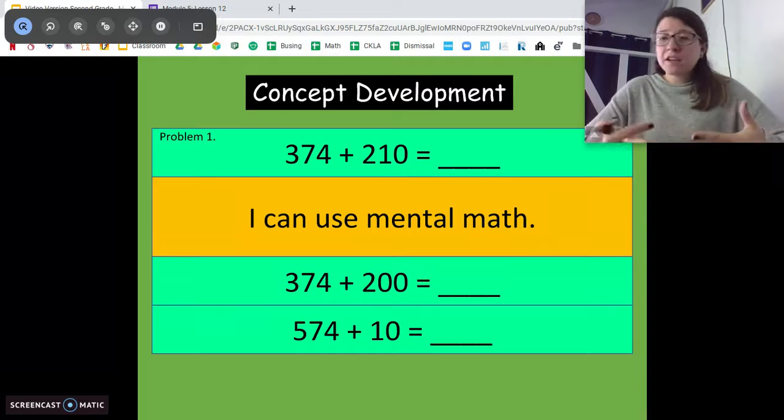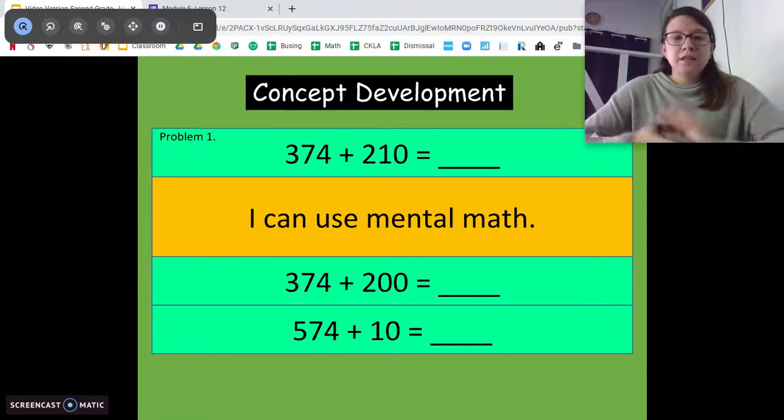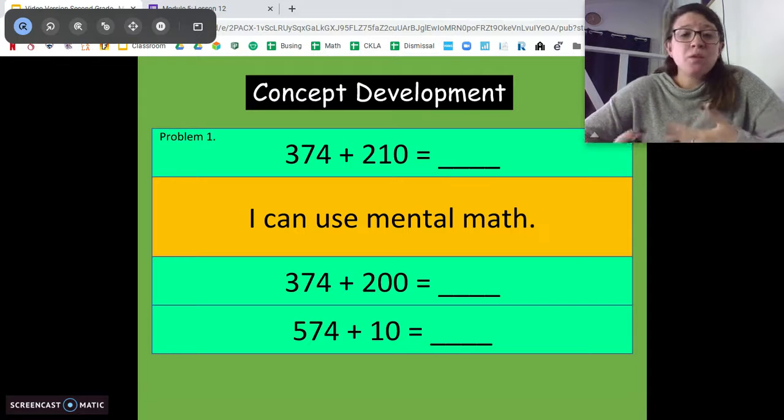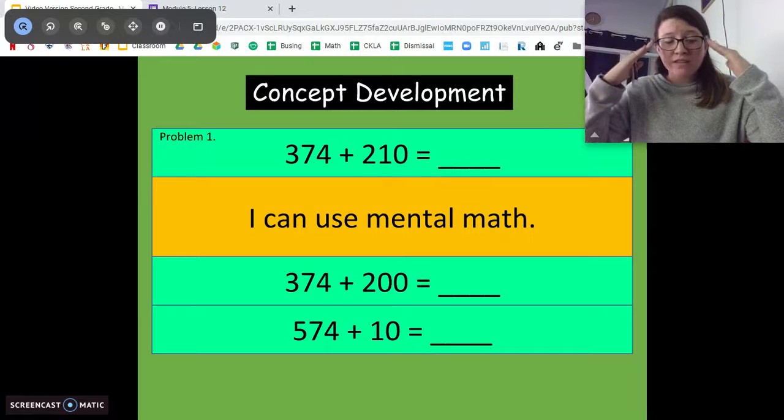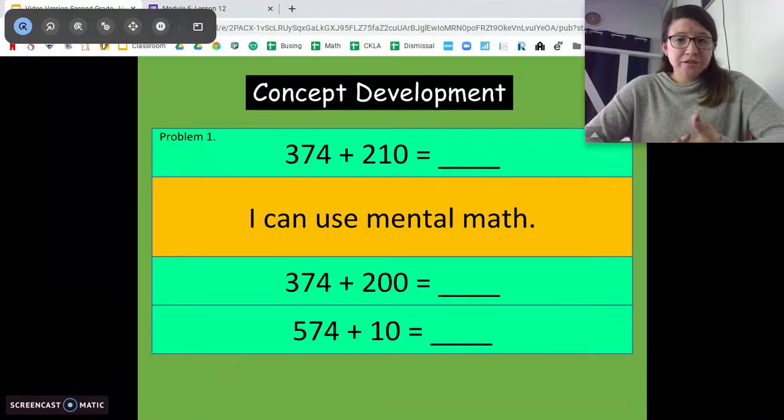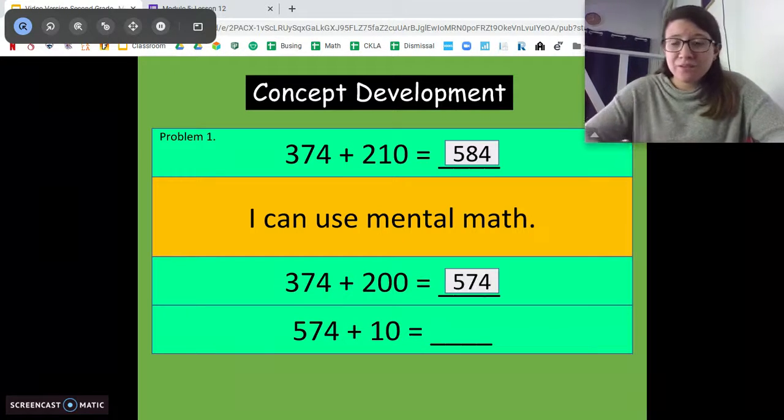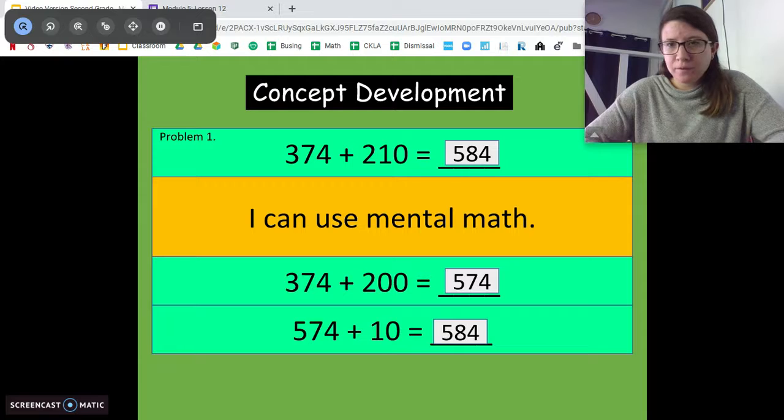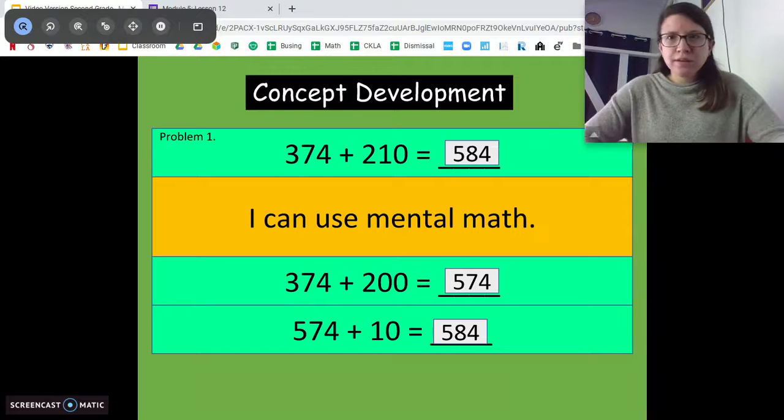So like I said at the beginning, there are a ton of different strategies to solve these problems. Today is all about finding the best strategy for you or finding the best strategy for the problem. So let's look at this one. It says 374 plus 210. What you can do is use mental math. We know we can break apart 210 to 200 plus 10. Right? Easy numbers for us to add. So we're gonna add in that 200 first. 374 plus 200. Just add another 200s to it. We get 574. Right? Then we just get to add that 10 more. So 574 plus 10 gives us 584. Totally fine if that works for your brain. If you're like, I don't need to break it all down. I can do this. Totally fine with me.